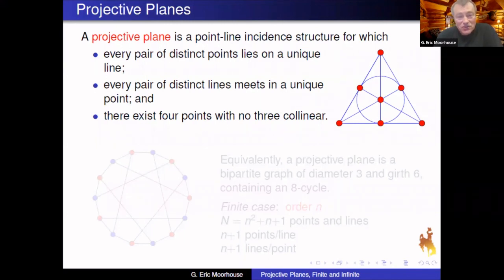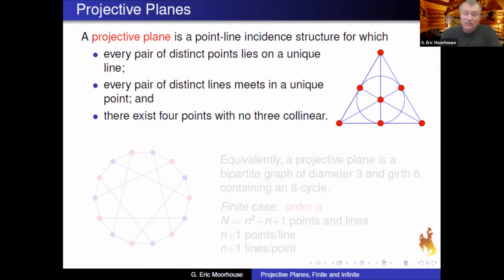Just to remind people of the definitions: a projective plane is a point-line incidence structure where every pair of points is joined by a unique line, every pair of lines meets at a unique point, and we have a non-degeneracy condition that says there are four points with no three collinear.